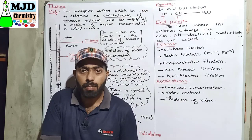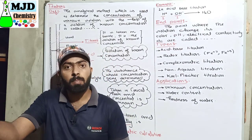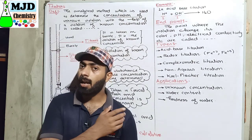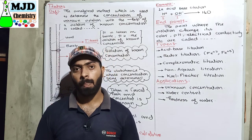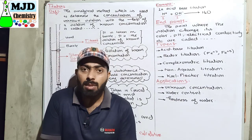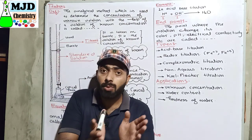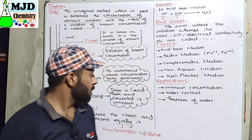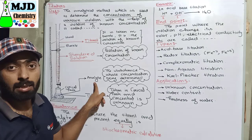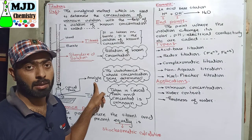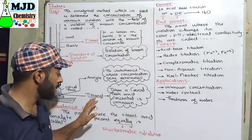Another term is analyte. The analyte is the substance given by the examiner whose concentration we need to determine. We don't know the concentration of that substance, so we use the titration method to determine it. The substance whose concentration is unknown is known as the analyte.